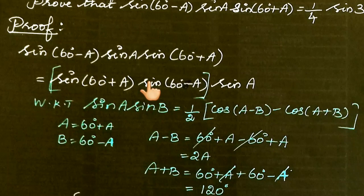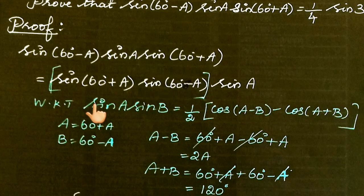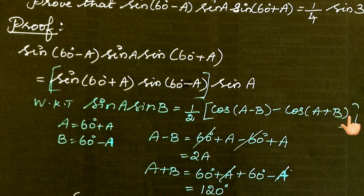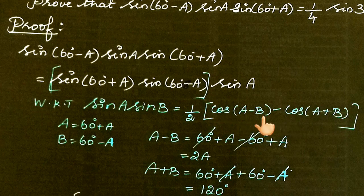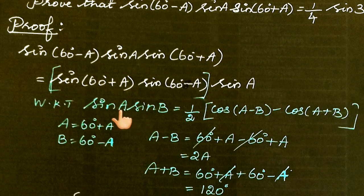For sin×sin products, we know that sin(A) × sin(B) = 1/2[cos(A-B) - cos(A+B)]. In place of A we have 60+A, and in place of B we have 60-A. First, let's find A-B: (60+A) - (60-A).